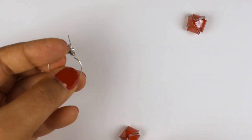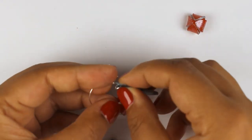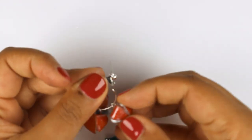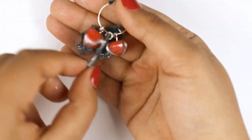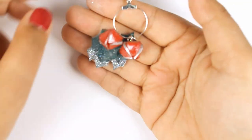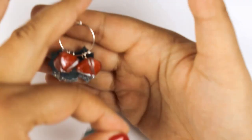I'm using an earring finding and adding the finished embellishments onto the hoop, alternating between the embellishments so that there are three leaves and two berries in between each of the leaves. There you have it, here is the finished set of earrings.